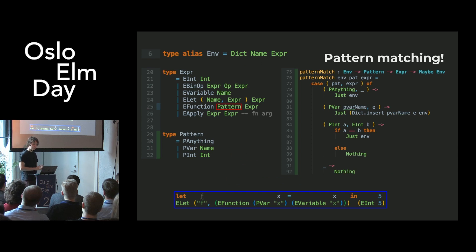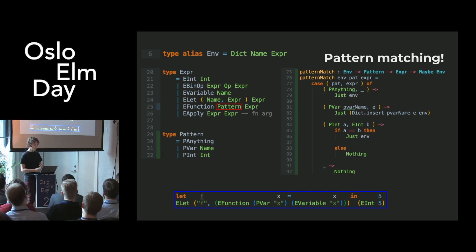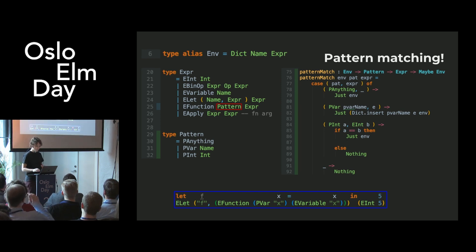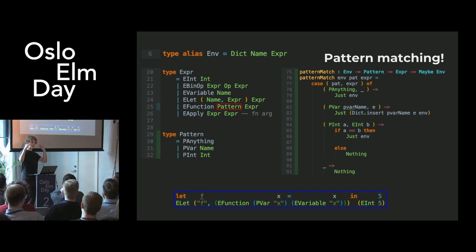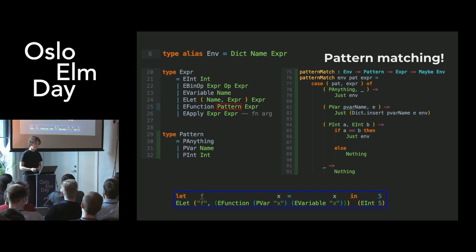Pattern matching is another feature I really like. We're going to implement the basics: the wildcard pattern (underscore), the pattern variable, and an integer constant pattern. The implementation of pattern matching is basically going through the pairs of patterns and expressions and doing what they're supposed to do. If we don't find a match, we just return Nothing.